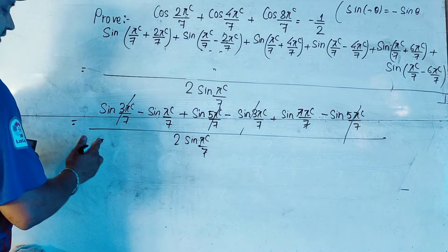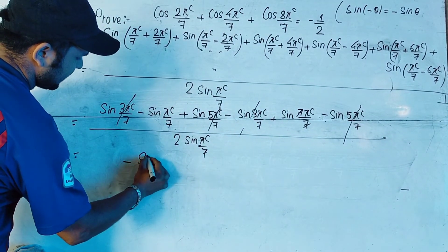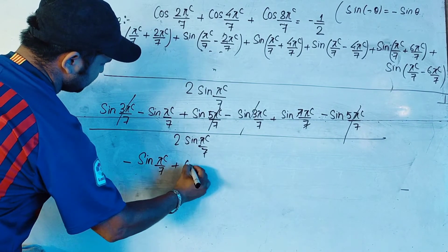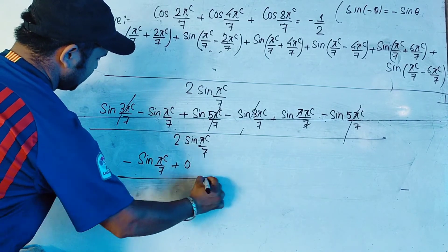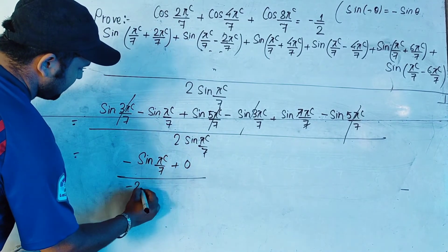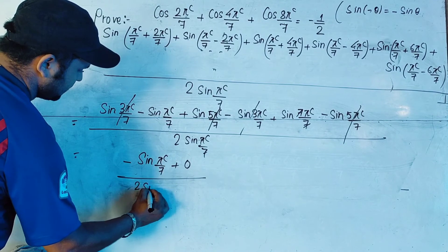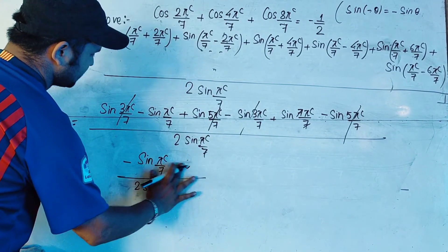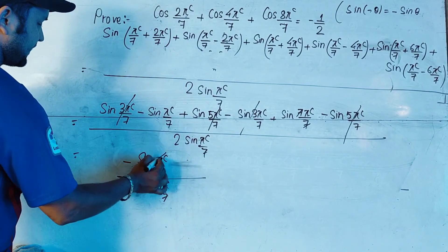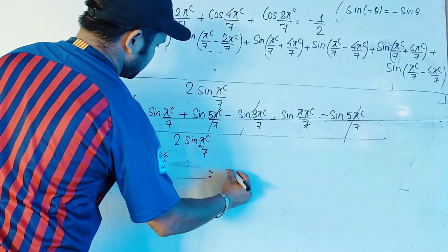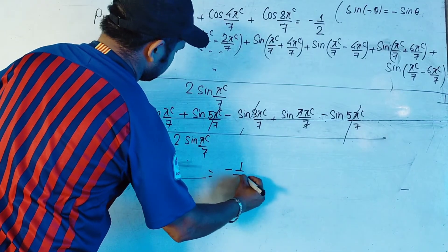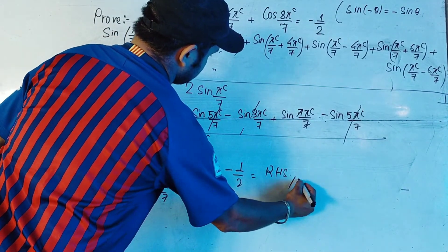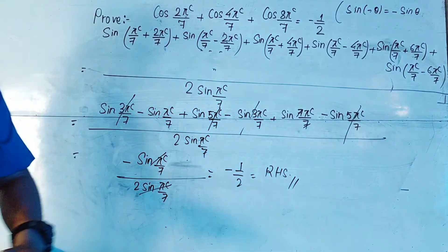What we have left in the numerator is -sin(π/7) + 0, because sin(π) = sin(180°) = 0. In the denominator we have 2sin(π/7). When we cancel sin(π/7), we are left with -1/2, which is our RHS. In this manner, we have solved the problem.